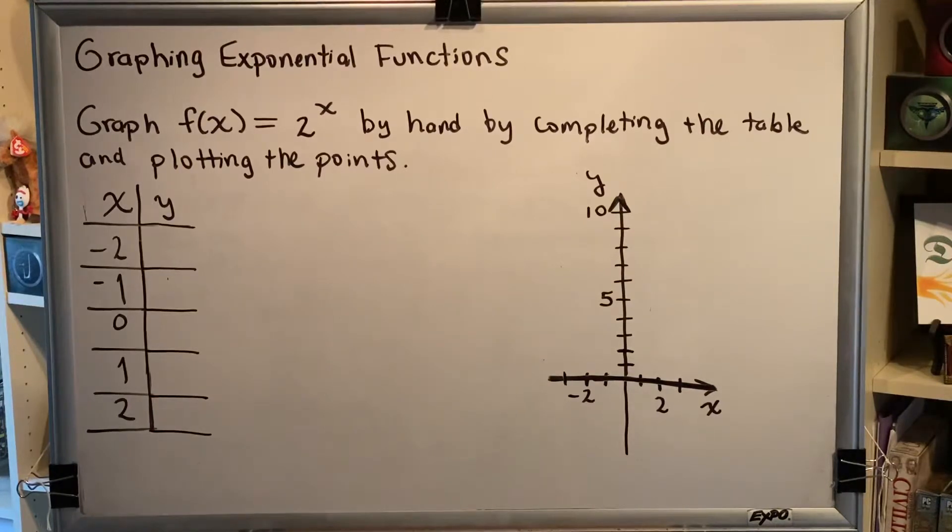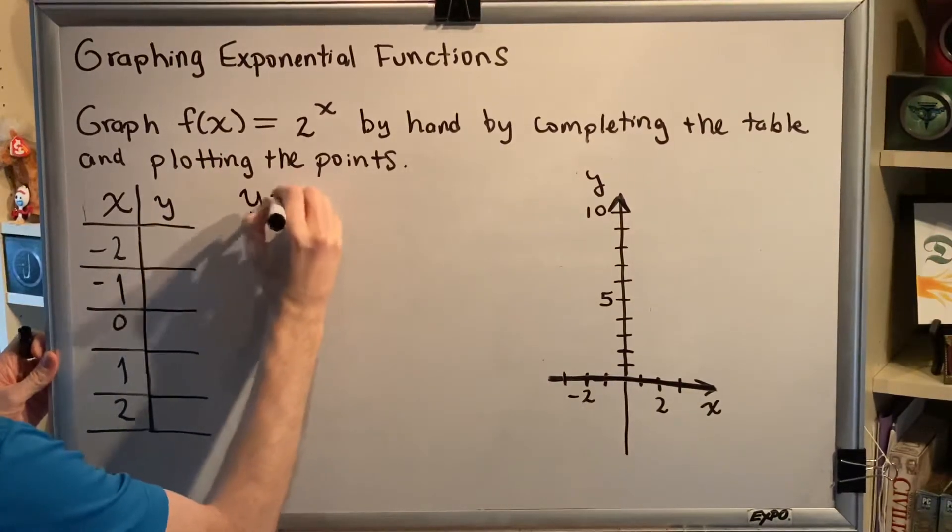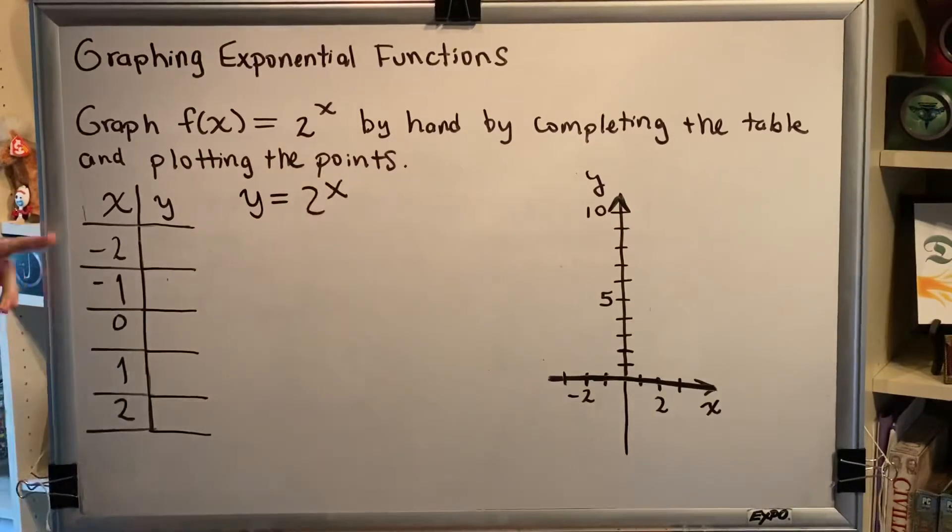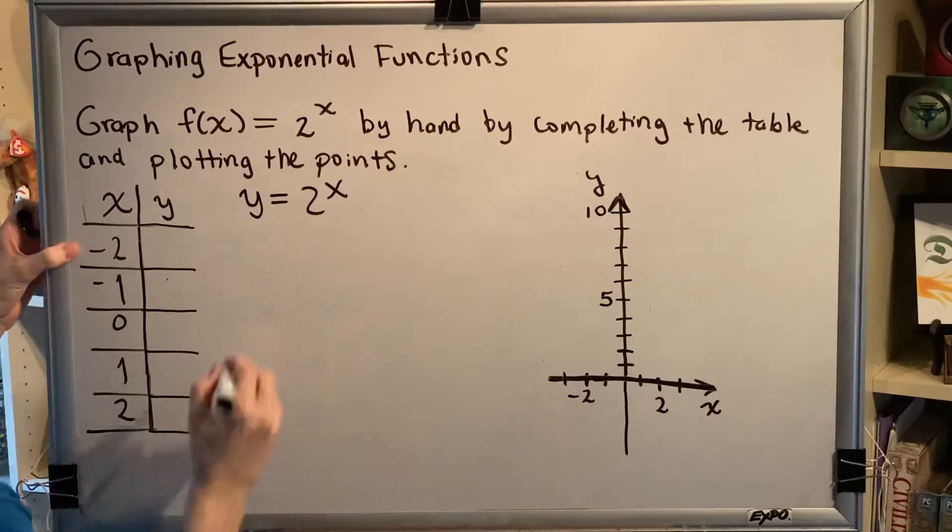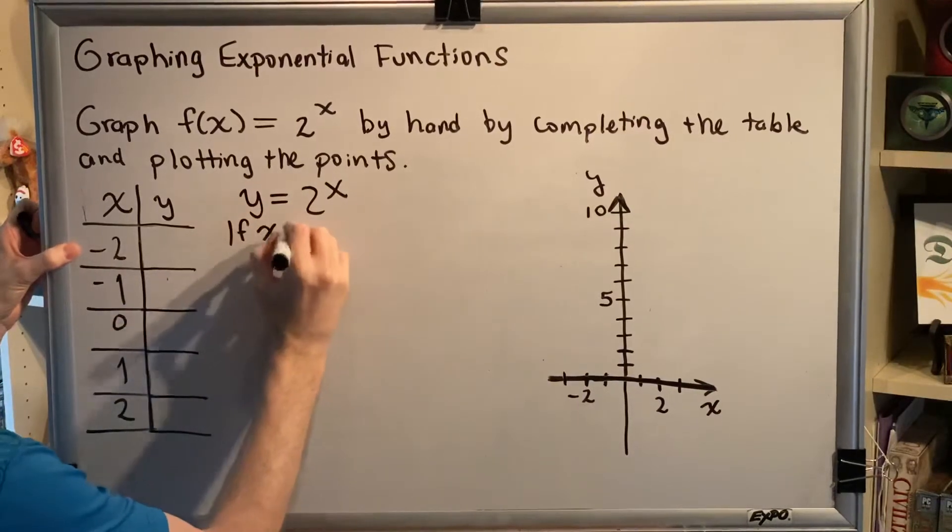Let's begin. First, f(x) is the same as y, so we can write y = 2^x, and we're given the values of x. Let's plug in each one at a time. If x equals -2,